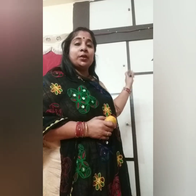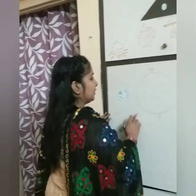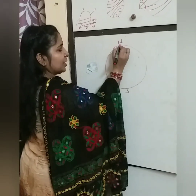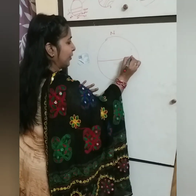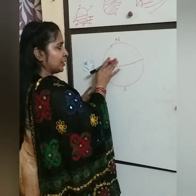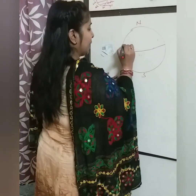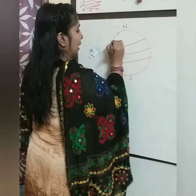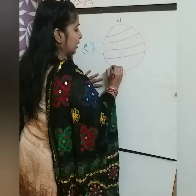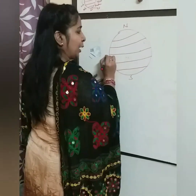Let me draw it on the board to make you understand more clearly about the important parallels of latitude. Suppose this is the earth — here is the North Pole and here is the South Pole. The equator passes through the center. All the other parallels of latitude are parallel to it. The important ones are the Tropic of Cancer, the Tropic of Capricorn, the Arctic Circle, and the Antarctic Circle. The equator is at zero degrees.